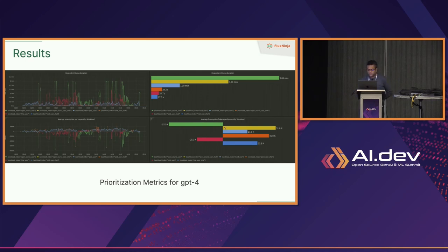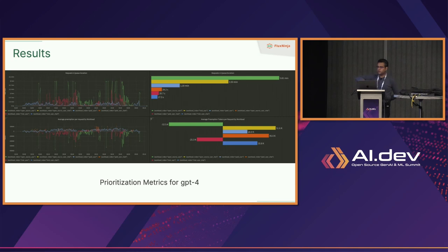The lower graph shows preemption — on average how many tokens a request was bumped up or down in the queue. The green line (open source users) is always bumped down and waits much longer compared to the blue line (paid users), which is always put at the front of the queue.